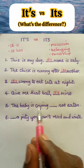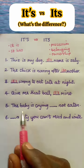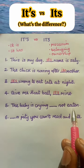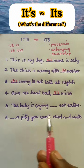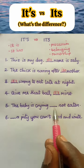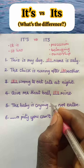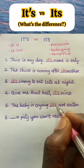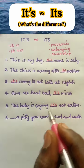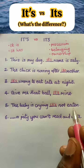Number five: 'The baby is crying. [Blank] not eaten.' Let's try 'it is': 'The baby is crying. It is not eaten' — the sentence does not make sense. Let's try 'it has': 'The baby is crying. It has not eaten' — it makes sense. It means 'it's' with apostrophe is the right word here, but in this case the 'it's' means 'it has.' So: 'The baby is crying. It's not eaten.' Correct.